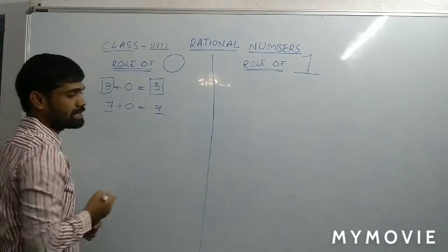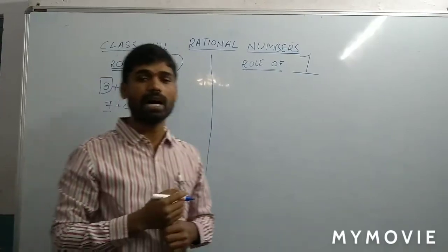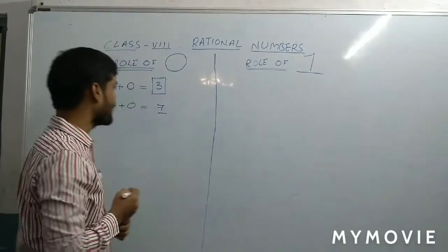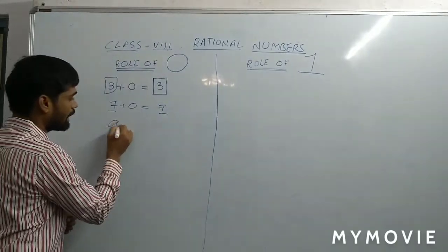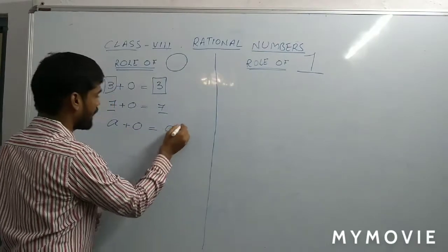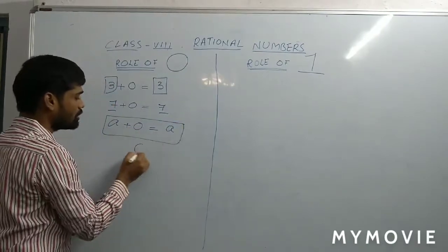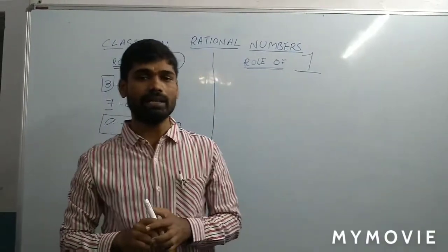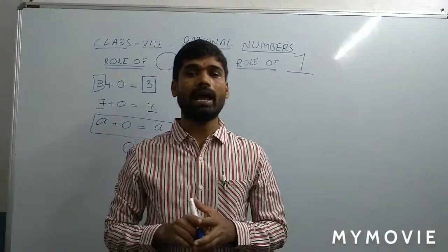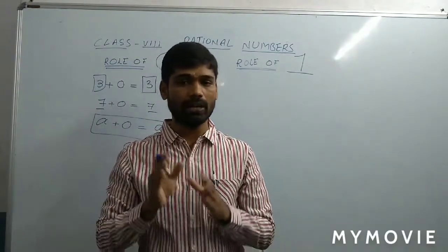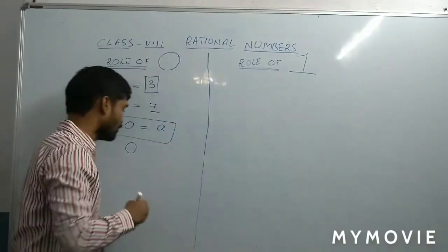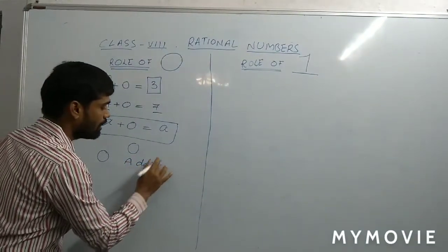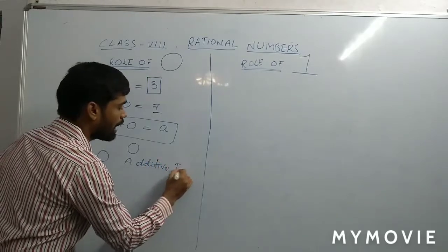7 and 7 — the same rational number will be the answer. Means, there is no change in the sum. That's why, let us take any number: A plus 0 is equal to A. What is the role of 0 here? It is not changing the value. That's why it is called as additive identity. So, 0 is called as additive identity.